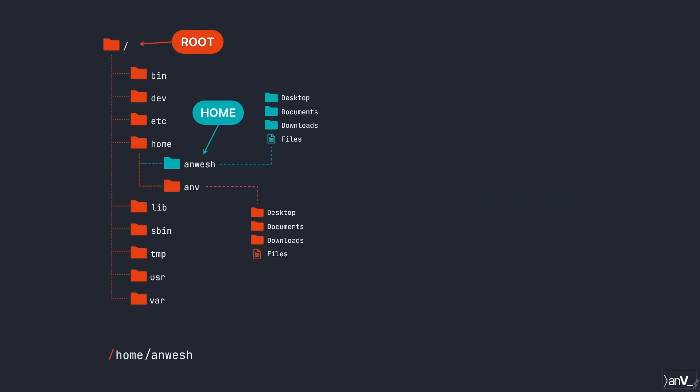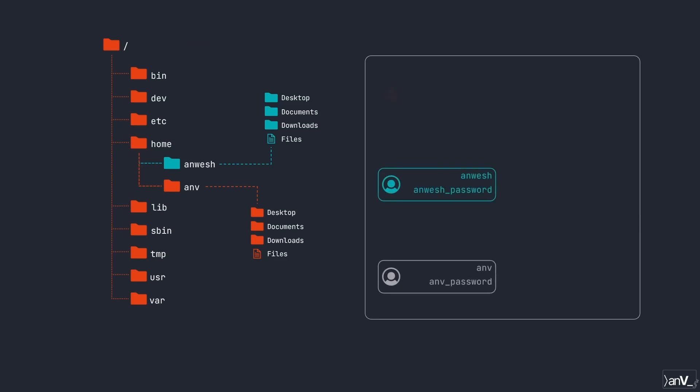If you want to update the system or install a package and make it accessible to other users, you need to be a root user. By default, a root user is created while installing the OS, generally without any password, but this account is locked. So if a non-root user wants to access root, they need special privileges and must unlock it with a password.